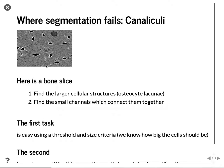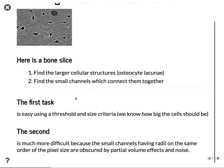If you want to find the bone structure or the cellular structures, that's fairly easy. But if you want to find the small channels that connect them together, that gets much more difficult. We have the partial volume effect, noise that comes in, and a number of things that make it a lot harder to actually do that segmentation. Simply picking a simple threshold doesn't do that for us very well.